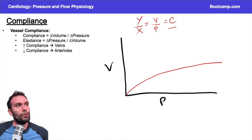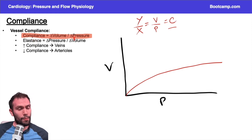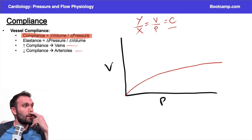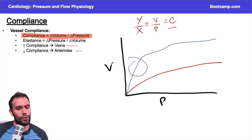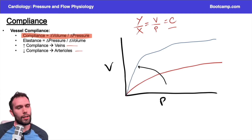I don't want to steal thunder from the respiratory video, so we'll come back to that. For this video, remember compliance when talking about these blood vessels — the veins have high compliance and the arterioles have low compliance. You can imagine the arterioles would have a curve with a lower slope, but the veins would have a curve with a much higher slope. The veins are going to be much better at accommodating these changes in pressure.